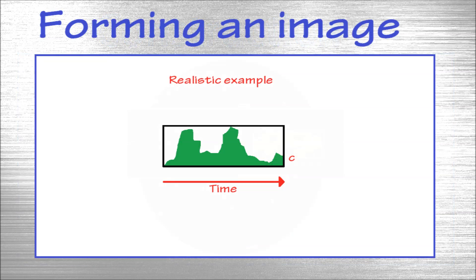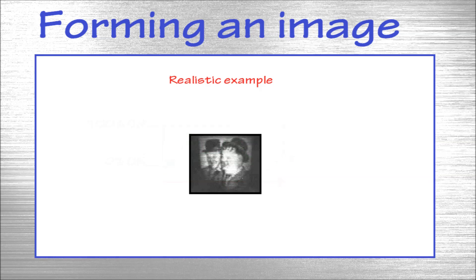In real televisors, the brightness won't be either white or black. So the light source will be varied in strength instead of being switched on and off. In a realistic example, the brightness can be anything between 0 and 100%.